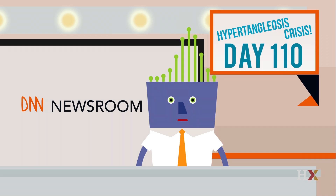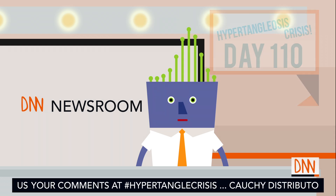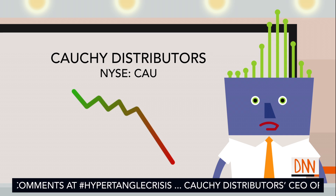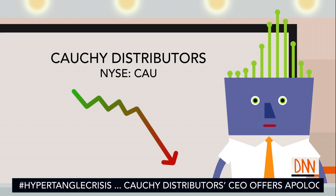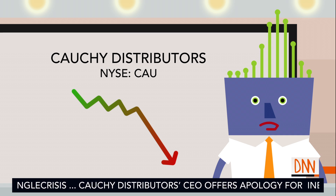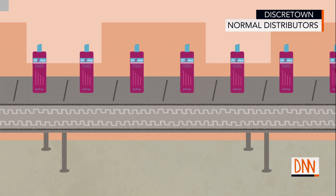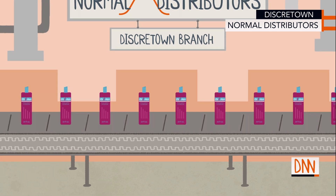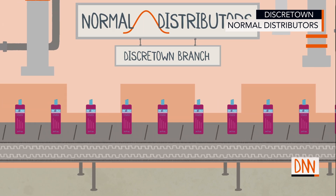We're back, live, on day 110 of our coverage of the hypertangulosis crisis. Cauchy Distributors' stock price has plummeted in the last week as it has become clear that their quality control is far inferior to their competitor. In other news, Normal Distributors has just released a new formula of the conditioner that patients can apply at home instead of at a clinic with limited capacity.